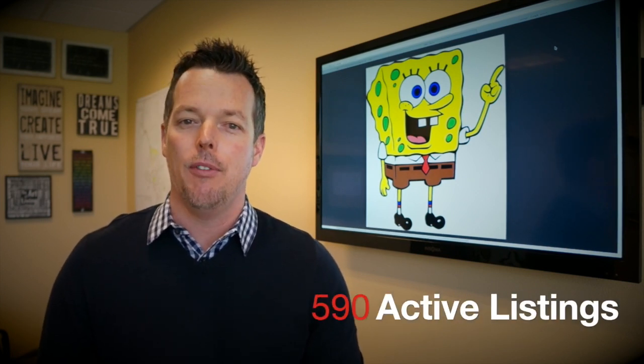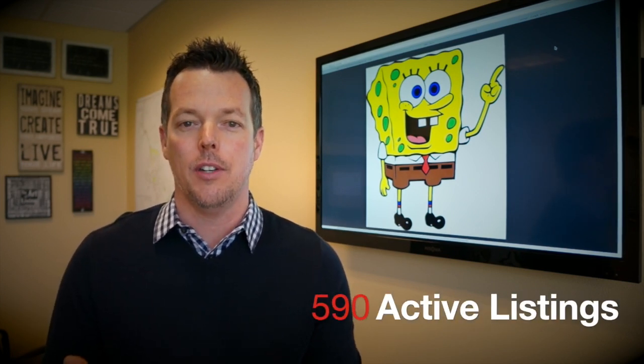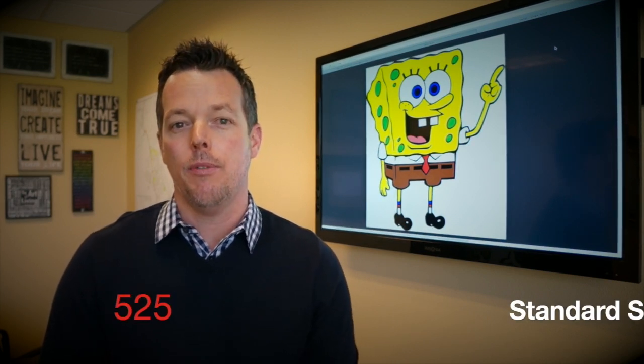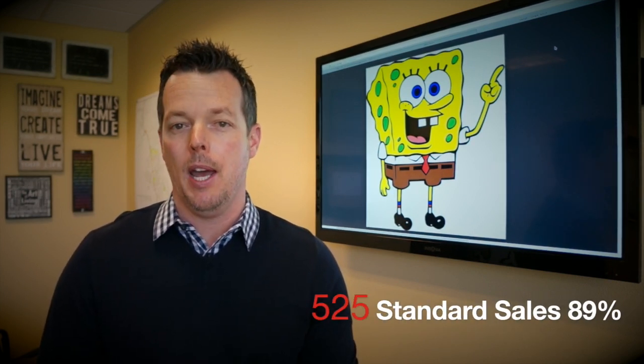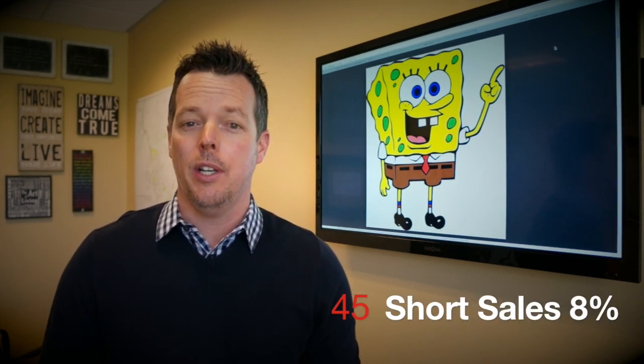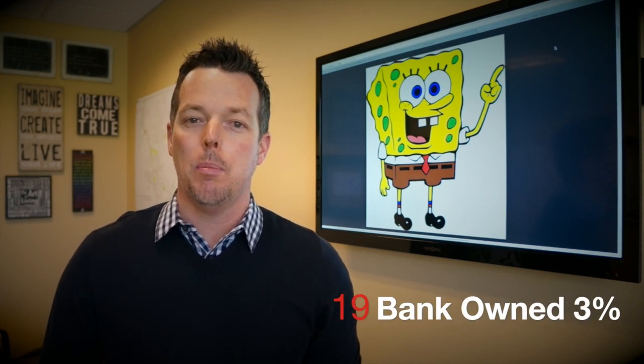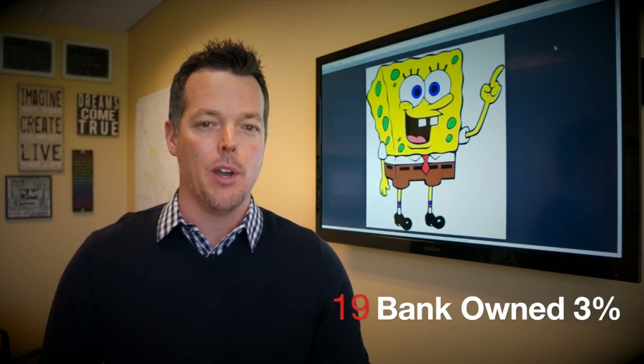Currently on the marketplace, 590 active listings, continuing the trend upward, more inventory is coming. 525 homes or 89% of what we have is standard sales, 45 homes or only 8% being short sales, continuing to drop every month, 19 homes or only 3% is that wonderful bank owned or REO inventory.